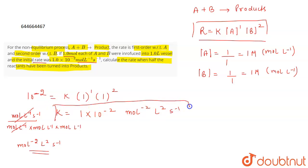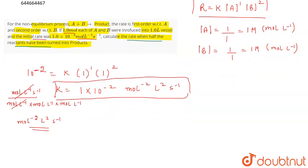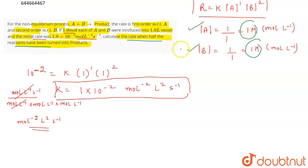This will be the rate constant of this reaction. Now, if half of the reactants were turned into products — initially the concentration of A and B were 1 molar and 1 molar. Half of it is converted into products, which means half is left. So A left will be 1 by 2 and B left will be 1 by 2.